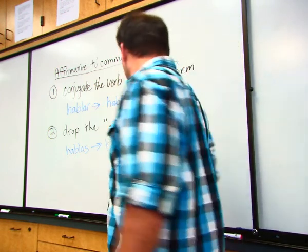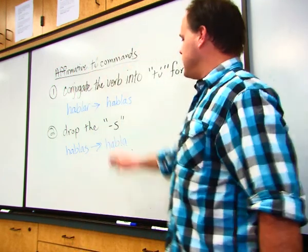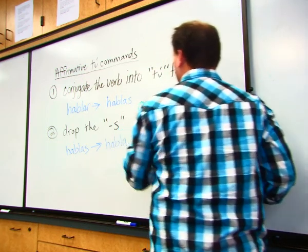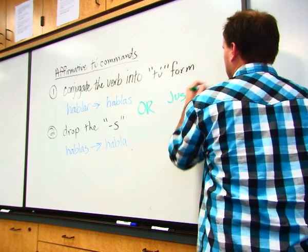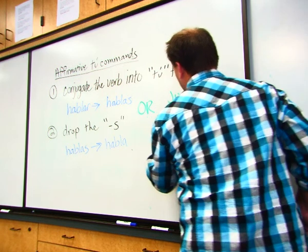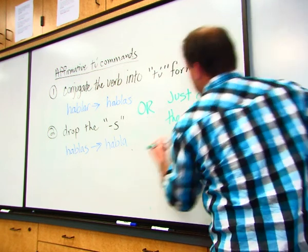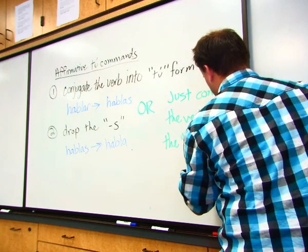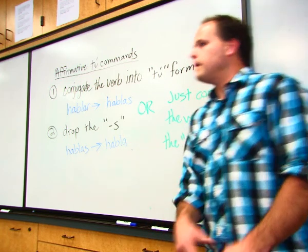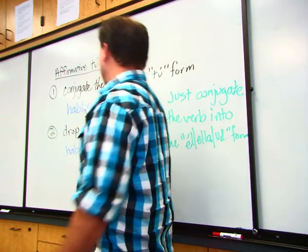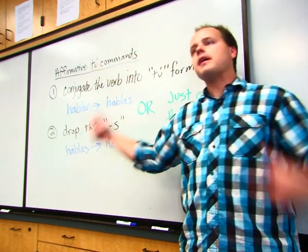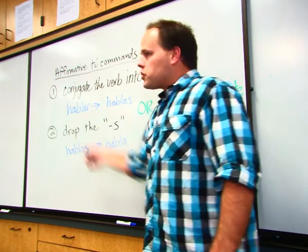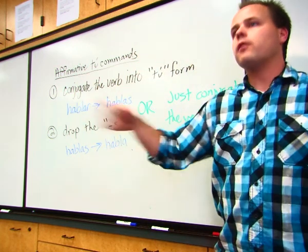Now there's a shortcut, because two steps might be too many. What could we do to make the command form? Just conjugate the verb into the él/ella/usted form. Because habla — él habla — it's the same thing. So if you don't want to put it in the tú form and drop the S, you can just use the él/usted conjugation and you'll have the correct form.